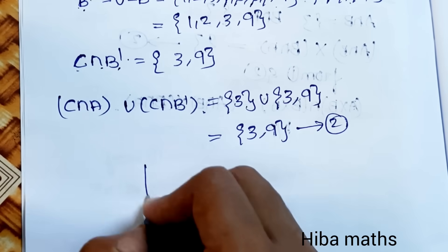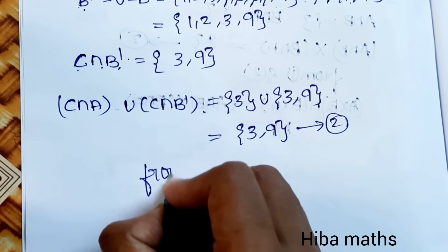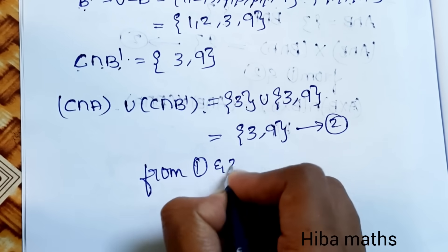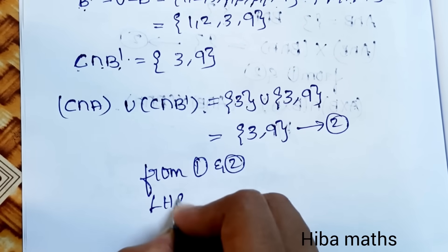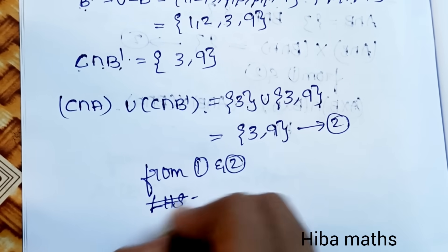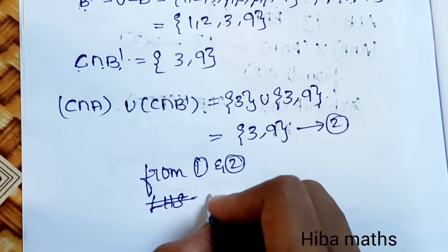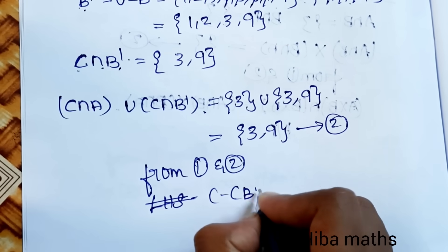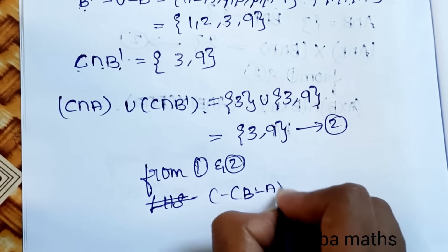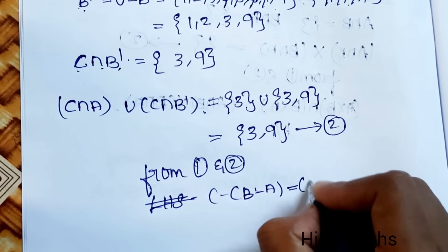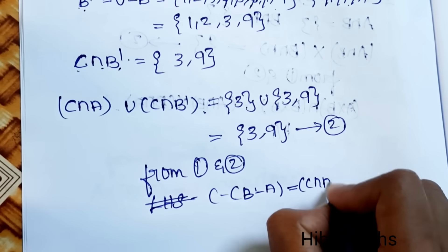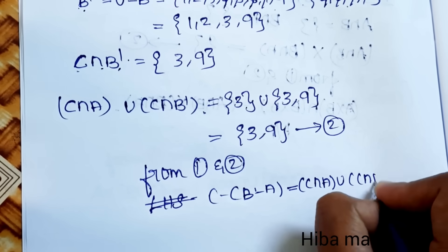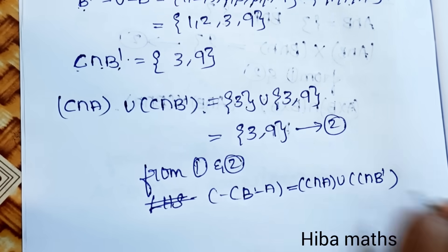For the RHS: C∩A = {3,4,5,9}∩{1,2,3} = {3}. C∩B' — B complement — gives {3,9}. Union of these two: {3}∪{3,9} = {3,9}. Since LHS = RHS = {3,9}, C-(B-A) = C∩(A∪C∩B'). Hence proved.